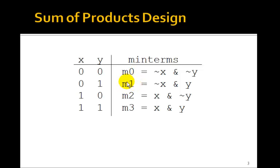How can we make minterm m1 equal 1? Well, if x is 0, we must NOT it to get a 1. If y is 1, it's already 1, so we just leave it. And again, 1 and 1 is 1.